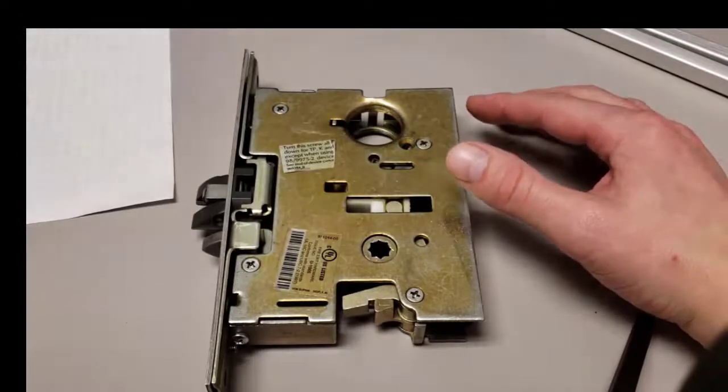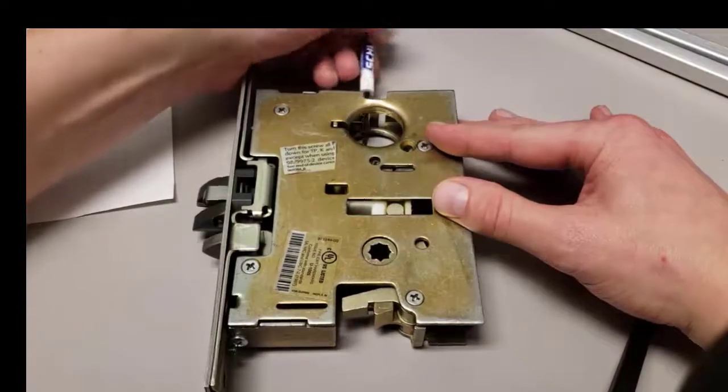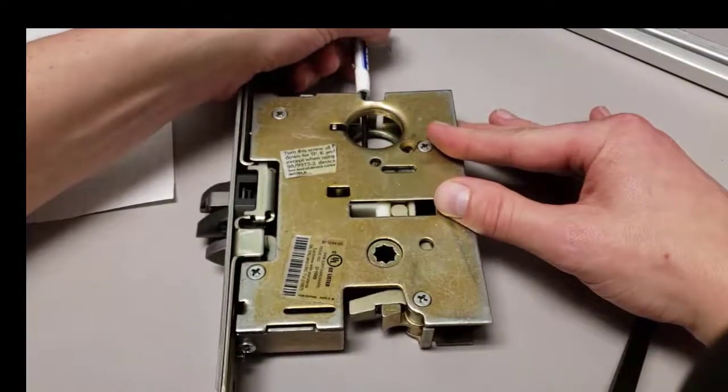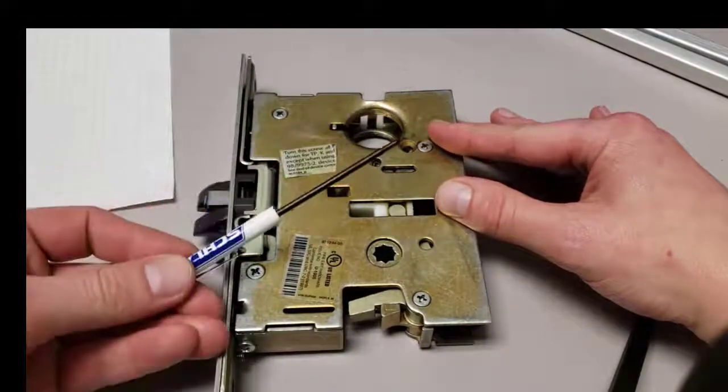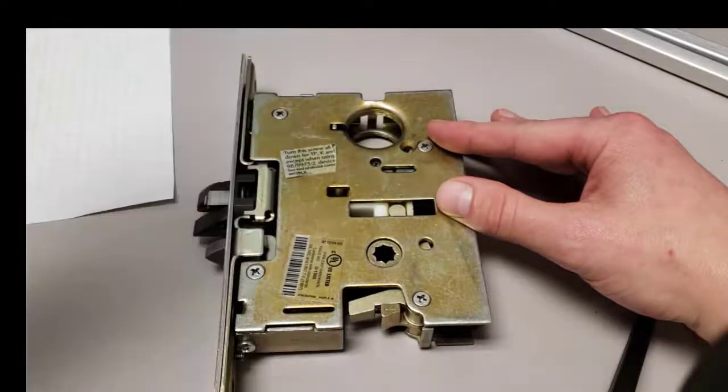This is a Von Dupren 7500 mortise lock currently in a storeroom function where key retracts latch. I am going to convert this to a classroom function using a number two flathead screwdriver and threading down the function screw all the way.